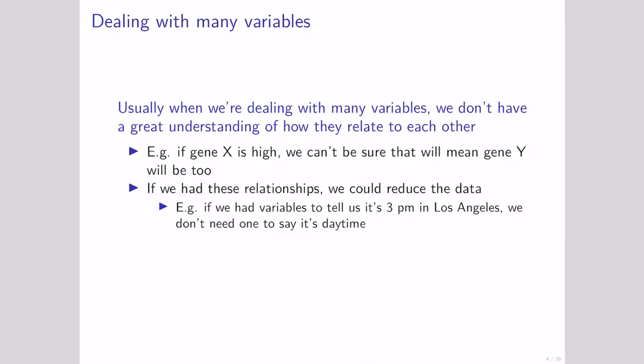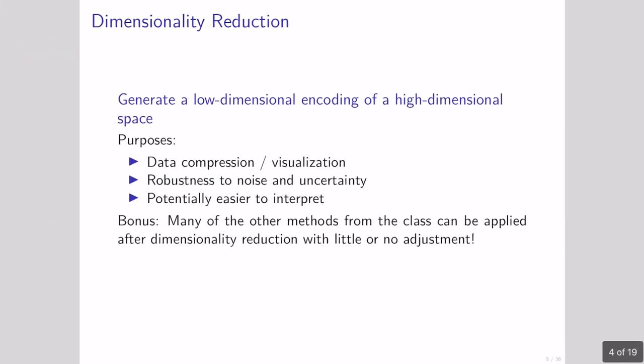For example, if we had a dataset with observations in Los Angeles and a variable representing the time in Los Angeles, and then a variable representing whether or not it was daytime — if it's 3 p.m. in Los Angeles it should be daytime, so we don't actually need to store both things. We could simplify this down and make our dataset simpler. Broadly, the techniques we're going to talk about in this lesson are called data reduction. We'll reduce down our data in a way that preserves what we care about and gets rid of information we don't care about.